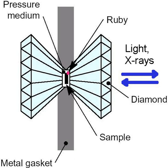Multi-anvil presses involve an arrangement of anvils to concentrate pressure from a press onto a sample. Typically the apparatus uses an arrangement of 8 cube-shaped tungsten carbide anvils to compress a ceramic octahedron containing the sample and a ceramic or refractory metal furnace. The anvils are typically placed in a large hydraulic press.